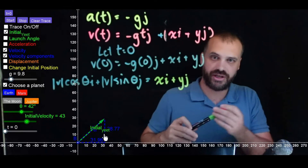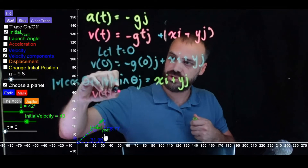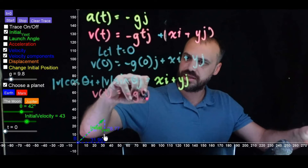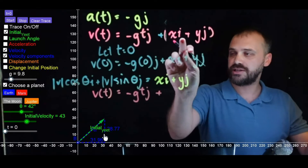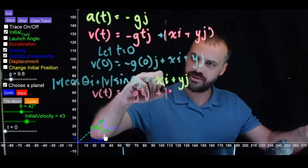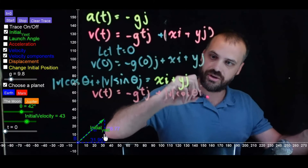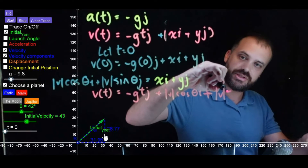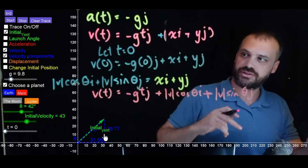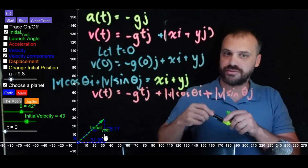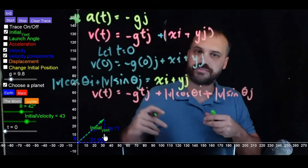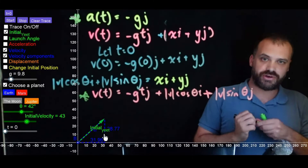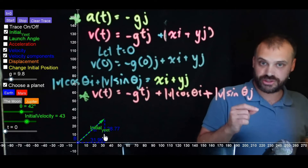So we can now finish and say our velocity equation over time equals negative gt j plus the magnitude of the initial velocity cos θ i, plus the magnitude of the initial velocity sin θ j. This equation is very, very important — it's the equation of a projectile's velocity over time.